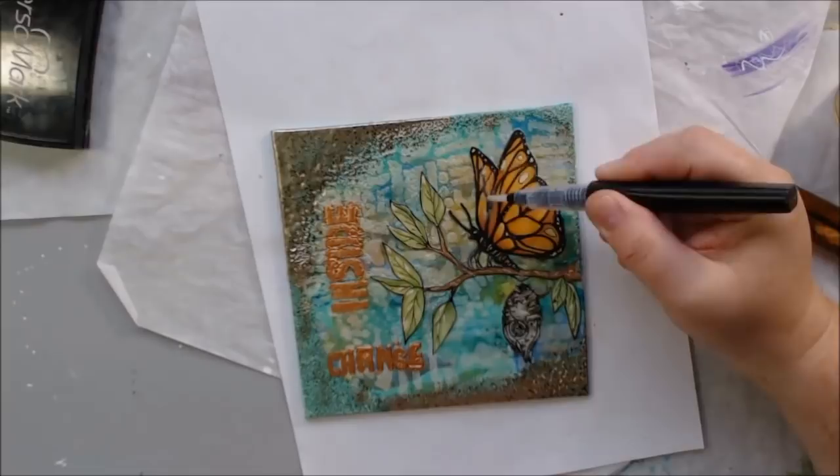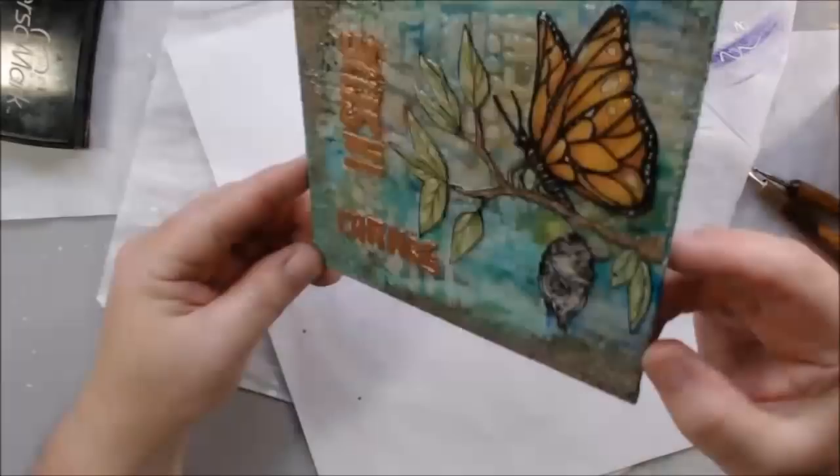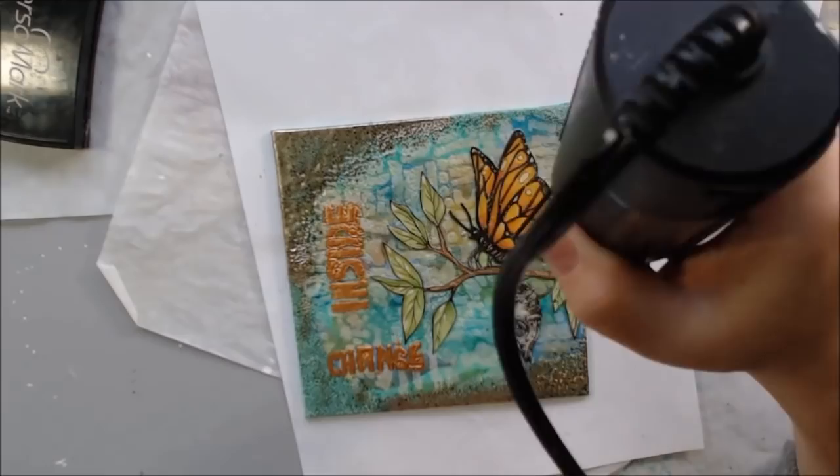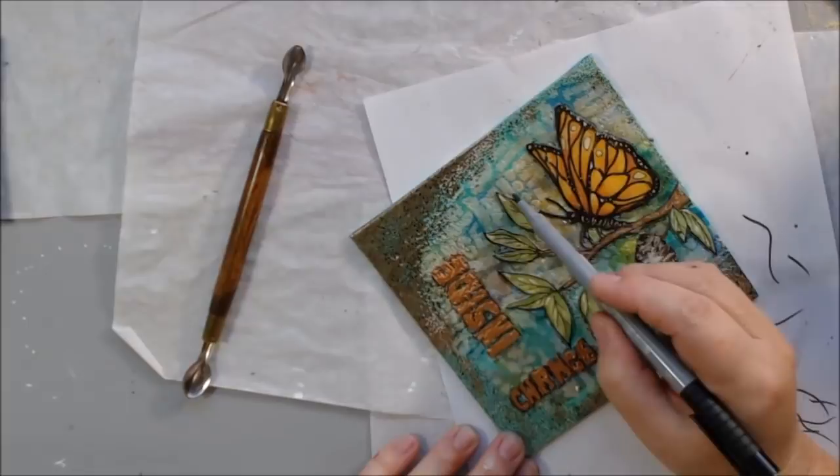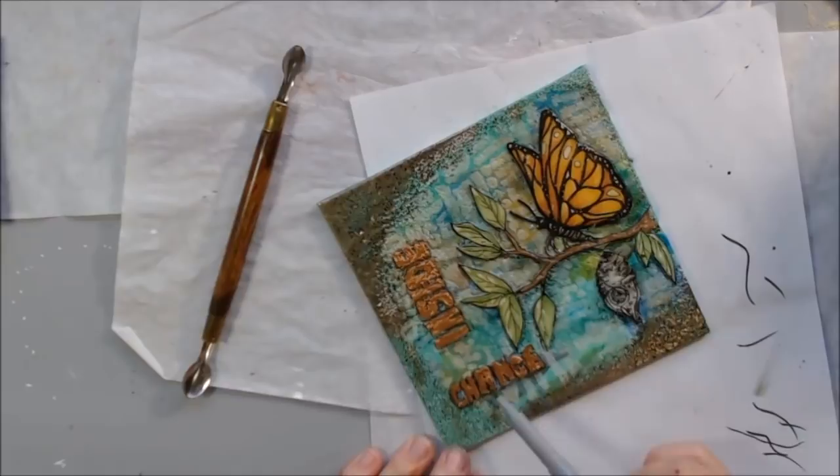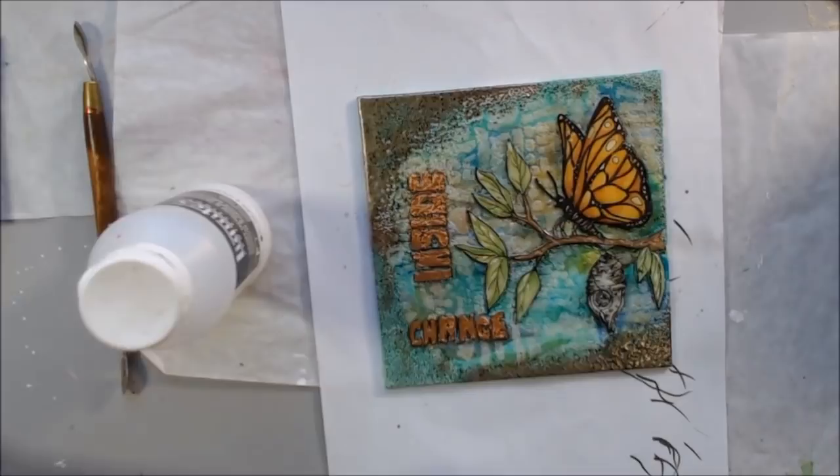I added some glitter brush pen—it's basically like Wink of Stella with very fine glitter. I added that to the wings and heat set it so it would melt into that chunky embossing powder. I also added shadows around everything using Pitt artist brush pen in dark gray. That was pretty much my finishing except for a coat of glossy varnish.